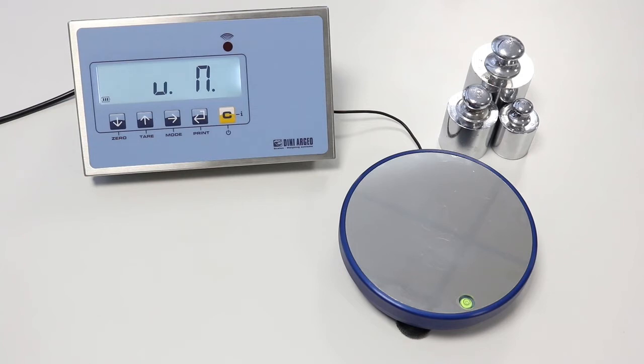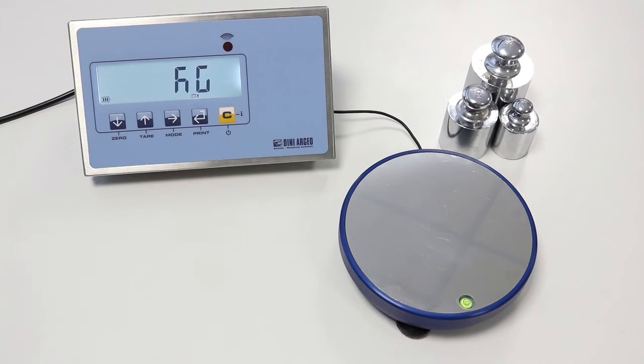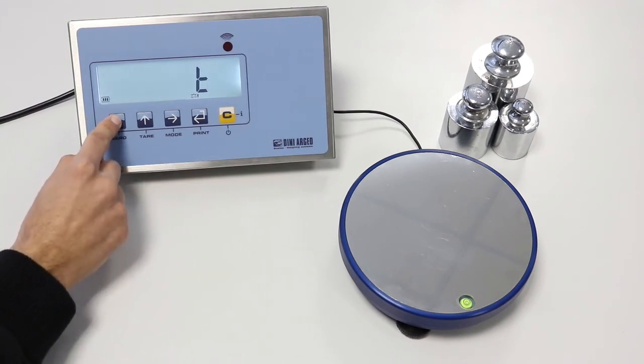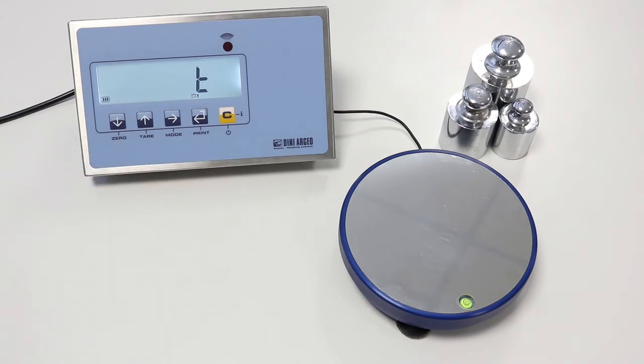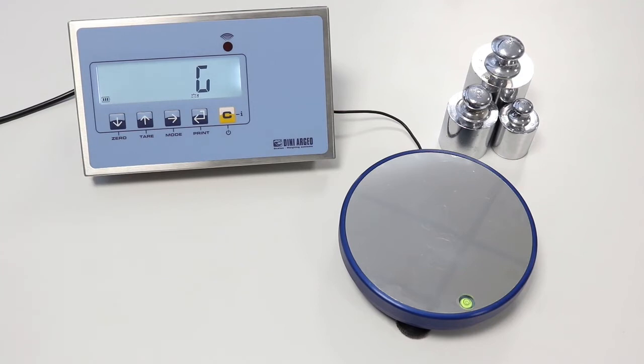If you need to come back, you can use the TER key. UM is the unit of measure. We can choose between kilograms, grams, pounds, or tons. Our example needs grams as the unit. We confirm with PRINT.